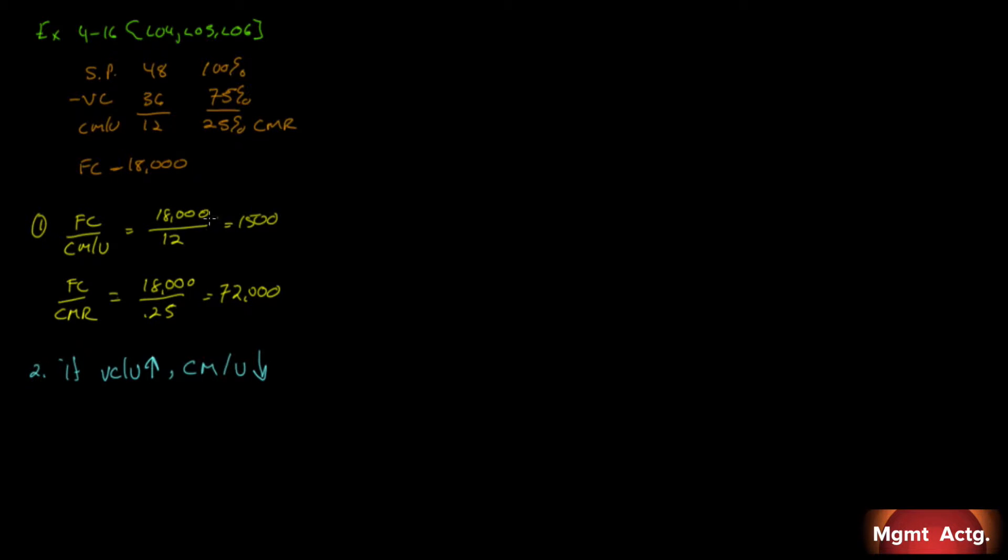So, if this is the formula for breakeven, fixed costs divided by contribution margin per unit, if our denominator gets smaller, this fraction gets bigger. So, therefore, the breakeven point, if it gets bigger, the breakeven point must increase. There's number 2.